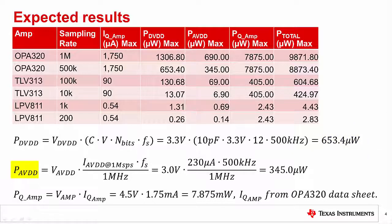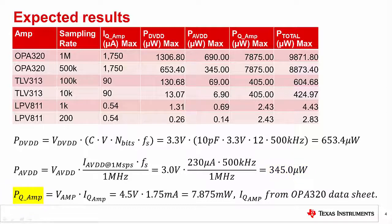P_avdd is the analog power for the ADC. It is calculated by multiplying the avdd supply voltage by the current. The current is calculated using information from the datasheet and the sampling rate. The datasheet provides the current measured at 1 MS/s, and this can be scaled by the ratio of the sampling rate to 1 MS/s. The analog ADC power is 345 µW. Finally, the amplifier power is calculated by multiplying the amplifier supply voltage by the quiescent current. Notice that the amplifier power is not dependent on the sampling rate. In the example, 4.5 V is multiplied by 1.75 mA to give a power of 7.875 mW.